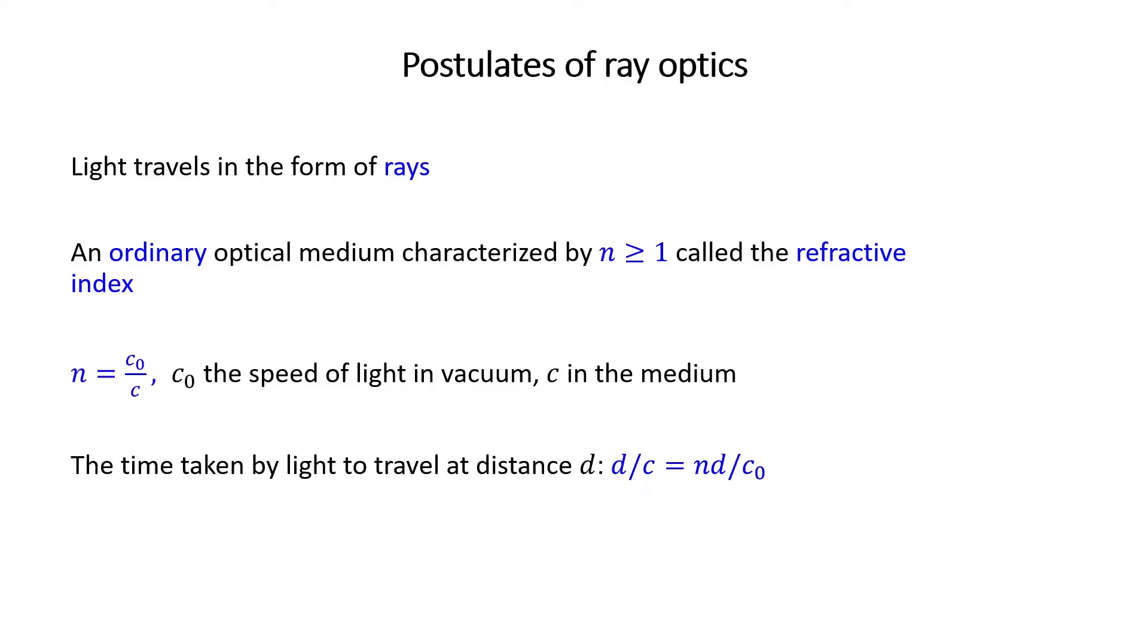The time taken by light to travel a distance d is the distance over the speed, or d over C. Or if we use the previous relation, we can write it as nd over C0. We call the product nd as the optical path length. So it is not a distance alone. It is the product of distance and the refractive index.